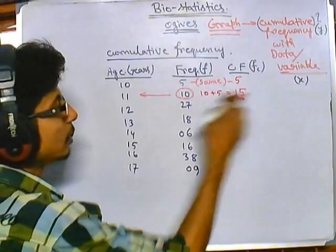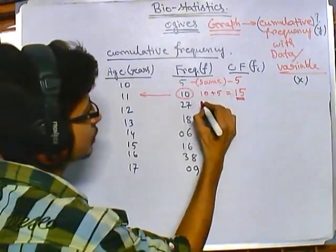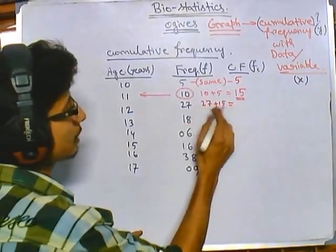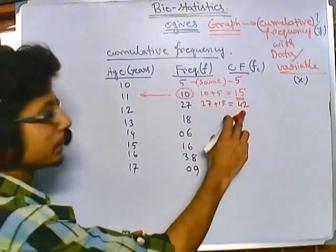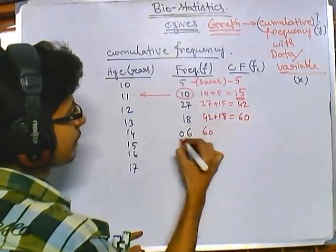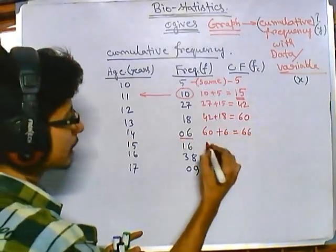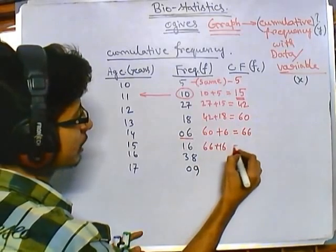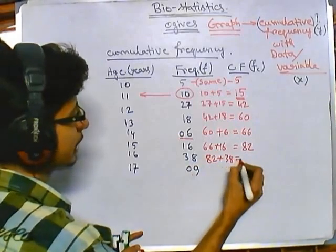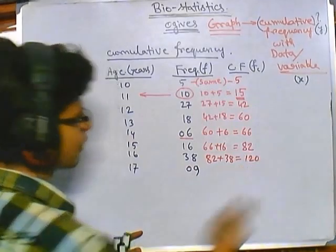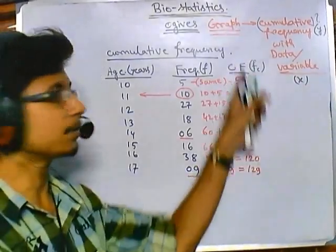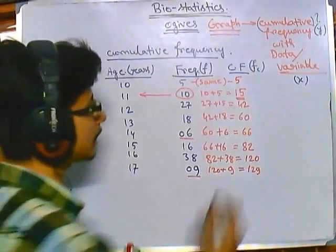We continue adding: 27 plus 15 gives 42. Then 42 plus 18 gives 60. Then 60 plus 6 gives 66. Then 66 plus 16 gives 82. Then 82 plus 38 gives 120. Finally, 120 plus 9 gives 129. So we have the cumulative frequency table, and you can see the frequency keeps increasing as we go down the table.